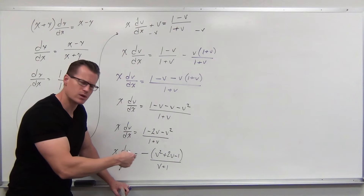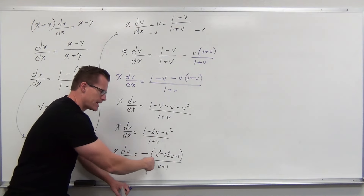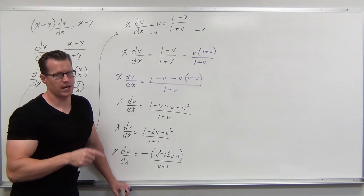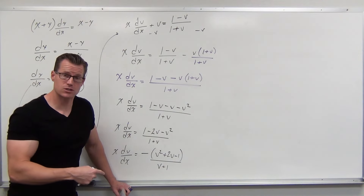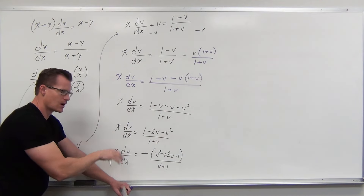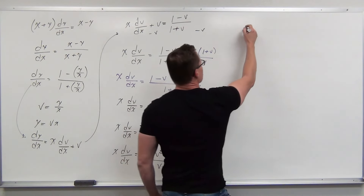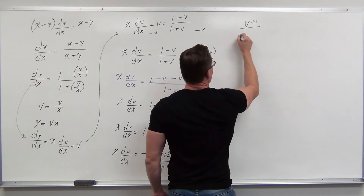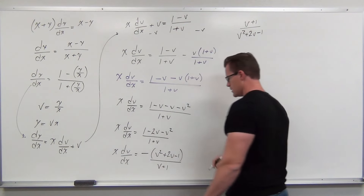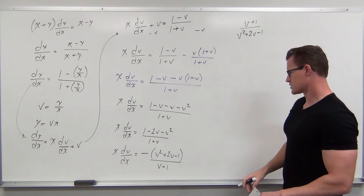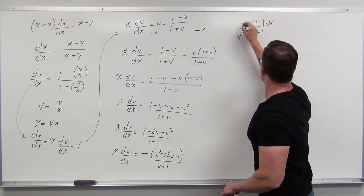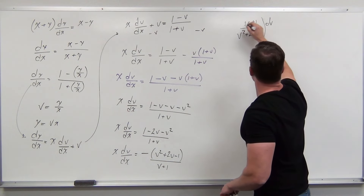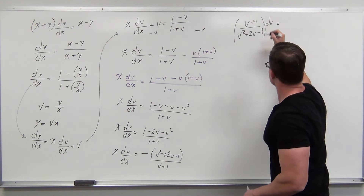Let's move things around. We'll multiply by (v + 1), divide by the expression (v² + 2v − 1), and divide by x, keeping any constants — including negatives — on the right-hand side. So structuring our v's on the left with dv, and our x's on the right with dx, we get (v + 1)/(v² + 2v − 1) dv equals −(1/x) dx. Now we're ready to integrate both sides.